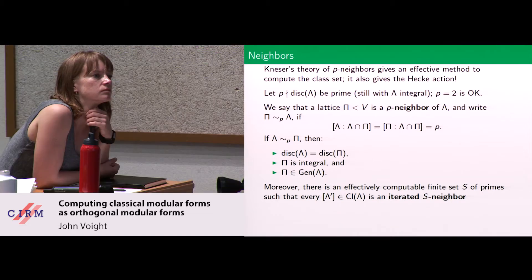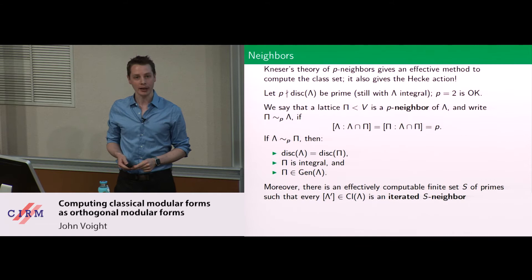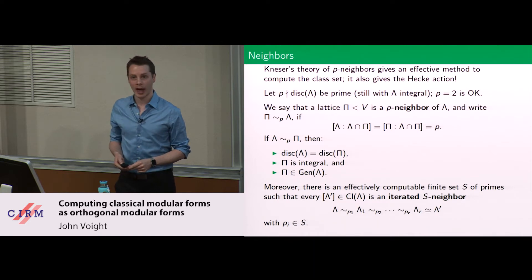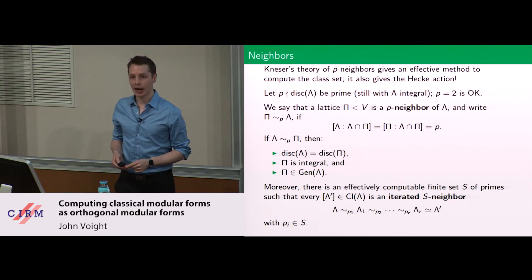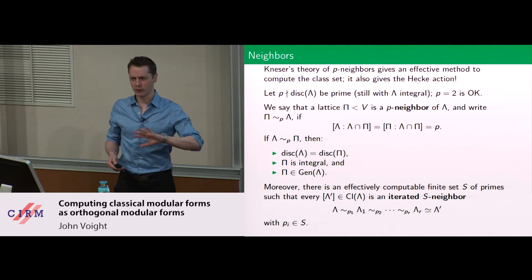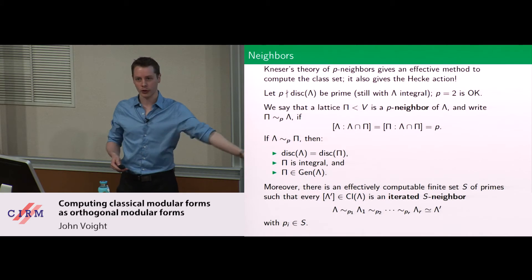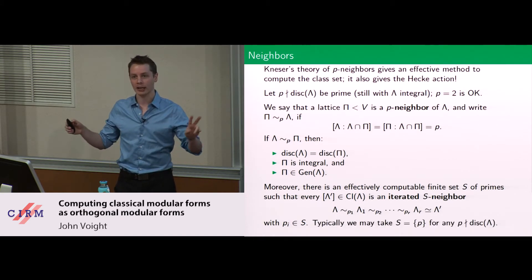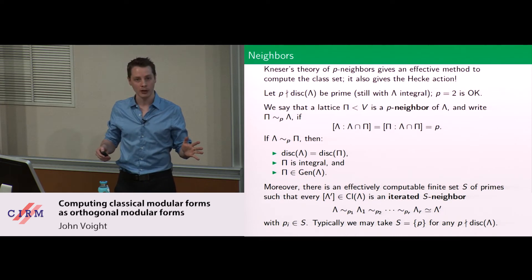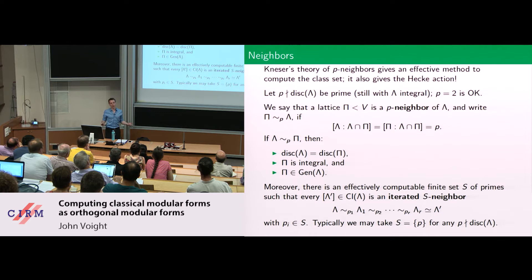If I have a p-neighbor, I have the following three properties: the discriminant is the same, pi is necessarily integral, and pi is again in the genus of lambda. There is an effectively computable finite set S of primes such that every class in the class set of lambda is an iterated S-neighbor — you start with lambda, take a p1-neighbor, take a p2-neighbor of that, and so on, ending with a representative of your class. Typically you can take S to just be any prime that doesn't divide the discriminant, though weird things can happen at 2.